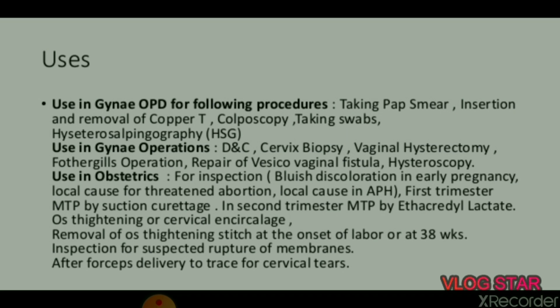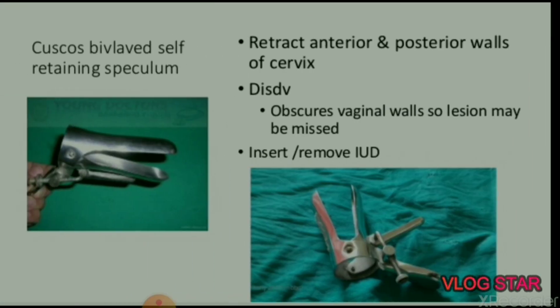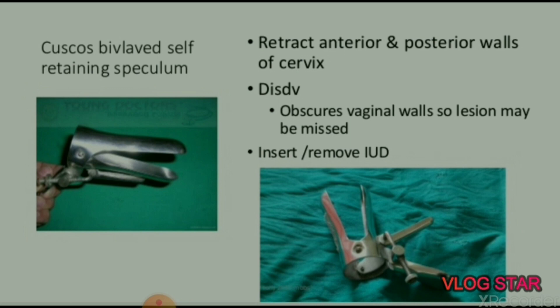Uses in obstetrics: inspection, bluish discoloration in early pregnancy, local cause for threatened abortion, local cause in antepartum hemorrhage, first trimester MTP by suction, second trimester MTP by ethacridyl lactate, cervical cerclage, removal of cerclage stitch at onset of labor or at 38 weeks, inspection for suspected rupture of membrane, and after forceps delivery to trace for cervical tears.